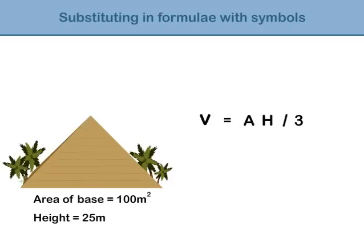Simply substitute 100 for a and 25 for h. So volume equals 100 times 25 divided by 3, which is 833.33 cubic metres.